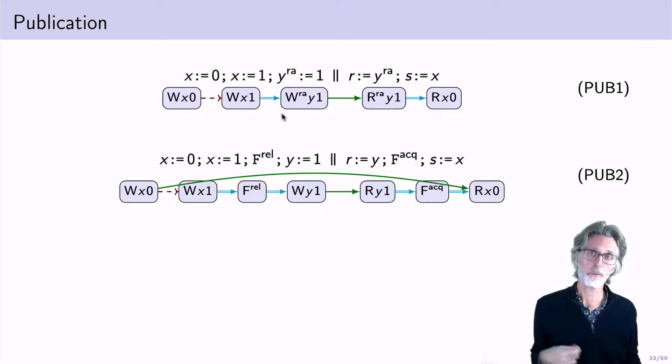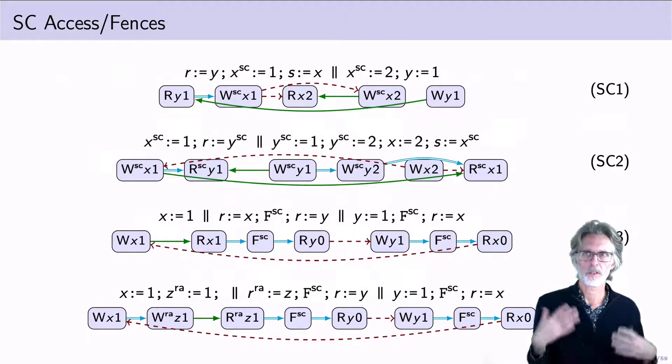And this gives you what you expect for publication. So for example, if I have a releasing write, it's going to follow, in POM set order, everything that precedes it. And if I have an acquiring read, it's going to precede, in POM set order, everything that follows it. And this is enough to give you the publication idioms you expect. As well as correct behavior for sequentially consistent access and fences.